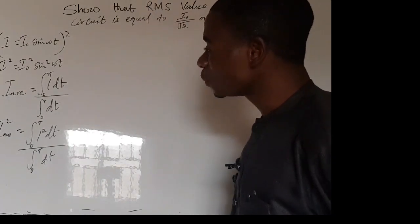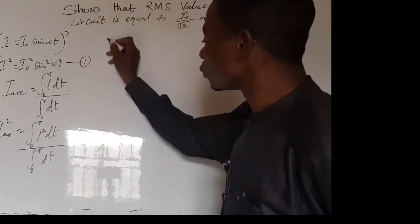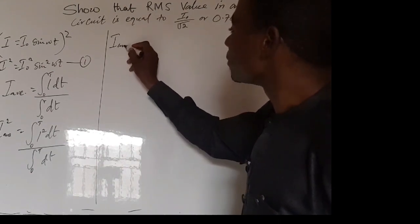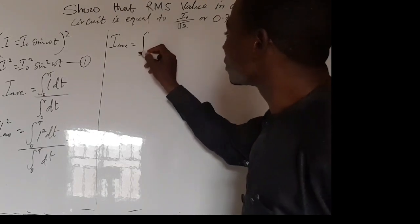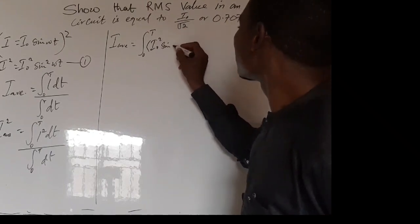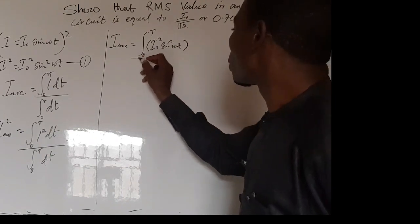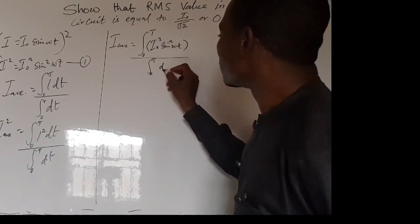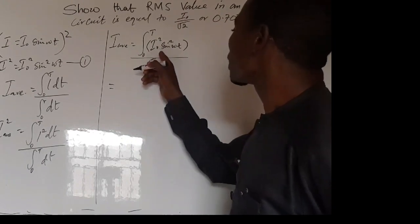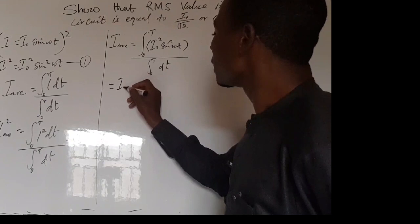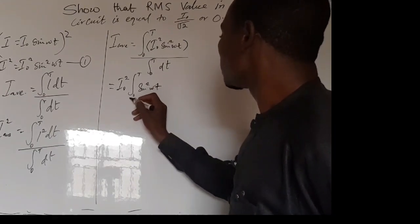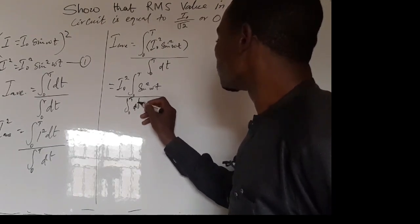This should be equation 1 and this should be equation 2. We substitute equation 1 into equation 2 so that I-average-squared is now equal to the integral from 0 to T of I-naught-squared sine-squared omega T, close bracket, all over the integral from 0 to T of DT. We factor out I-naught-squared first, so we have I-naught-squared times the integral from 0 to T of sine-squared omega T, all over the integral from 0 to T of DT.